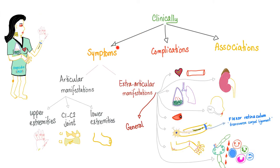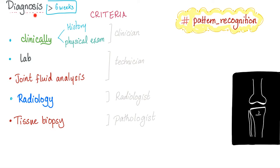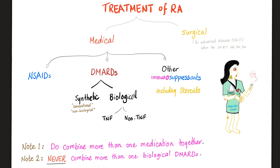We have talked about the clinical manifestations of rheumatoid arthritis before and how to diagnose it. Now we're talking about how to treat it — medical or surgical. Medically: non-steroidals, DMARDs, or other immunosuppressants such as steroids. DMARDs are either synthetic or biological; the biological are TNF inhibitors, which we covered in the previous video, and non-TNF inhibitors, which is today's topic.